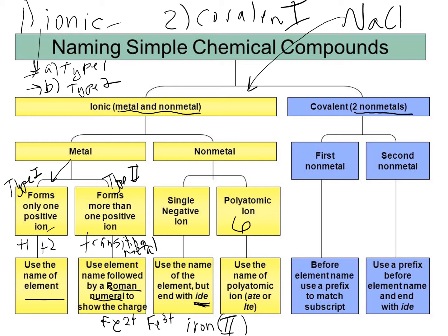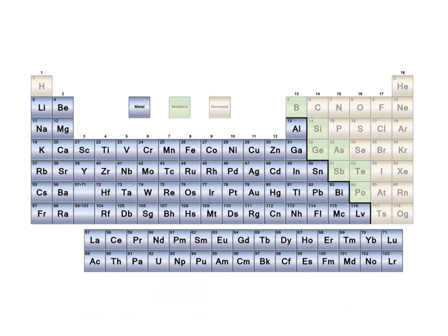Covalent compounds are between two non-metals. To name a covalent compound, you name the first non-metal, and then the second non-metal you change the ending to 'ide.' It's just like ionic — it has the ending 'ide.' And then you put prefixes in front to tell you how many atoms you have of each element, to match the subscripts. This is just an overview; what's important is figuring out what type of compound so you know which rules to follow.